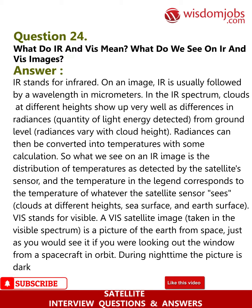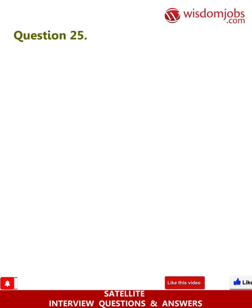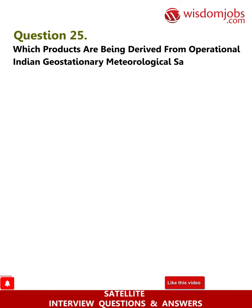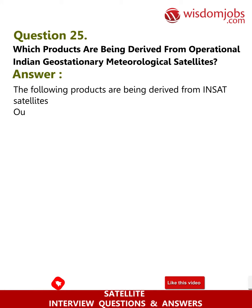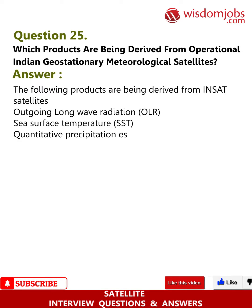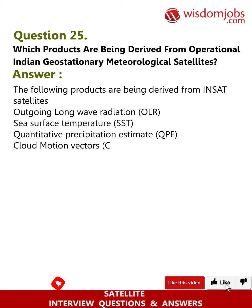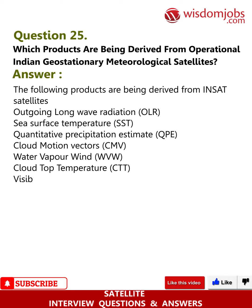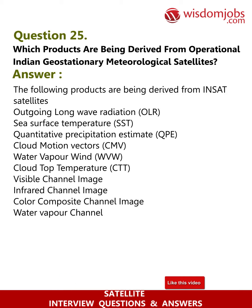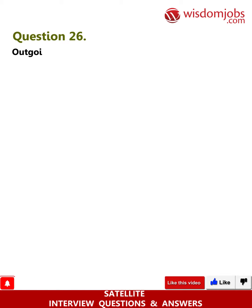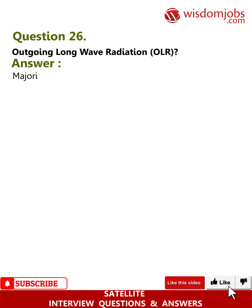Question 25: Which products are being derived from operational Indian geostationary meteorological satellites? The following products are derived from INSAT satellites: Outgoing Long Wave Radiation (OLR), Sea Surface Temperature (SST), Quantitative Precipitation Estimate (QPE), Cloud Motion Vectors (CMV), Water Vapor Wind (WVW), Cloud Top Temperature (CTT), visible channel image, infrared channel image, color composite channel image, and water vapor channel image.